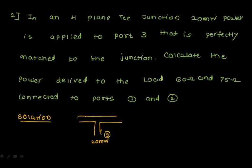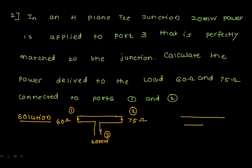Port 3 is perfectly matched. We need to calculate the power delivered to loads of 60 ohms and 75 ohms at port 1 and port 2 respectively. From the ideal characteristics of the H-plane T, whatever power is given to port 3 gets equally divided between port 1 and port 2 — so 10 milliwatts and 10 milliwatts.